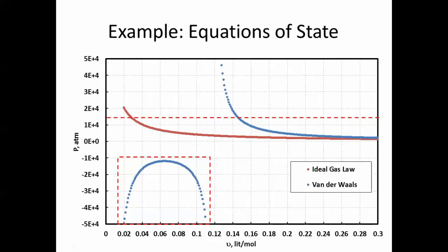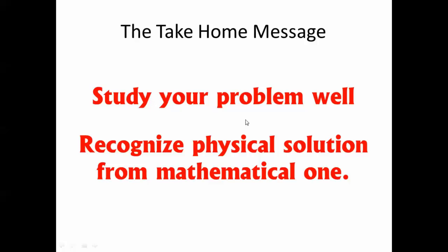But this part doesn't have any meaning. You have volume, and at this volume you have pressure which is negative, which doesn't have any meaning. And if you see here, at any point you'll have a pressure that has two volumes, which doesn't have any meaning. You have the same system, the same pressure, and the same temperature—then you have only one volume. So this part of the equation is just mathematical. It doesn't have any physical meaning. The take-home message is that you have to study your problem well and know which solution has physical meaning and which is just the mathematical solution.